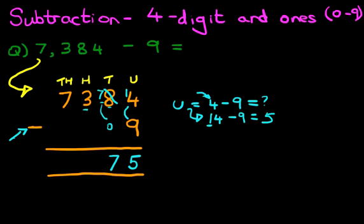The hundreds is the same. 3 minus 0 is 3. And the thousands is the same. 7 minus 0 is 7. And we have our answer.